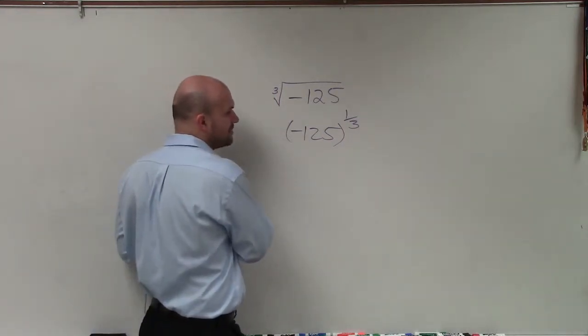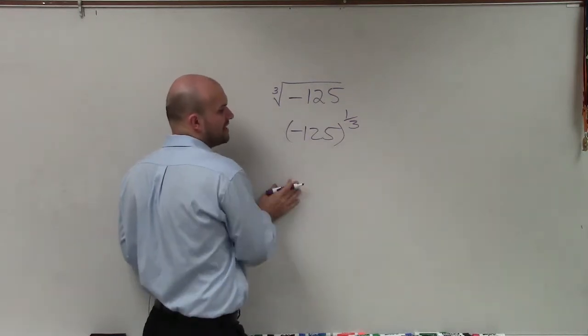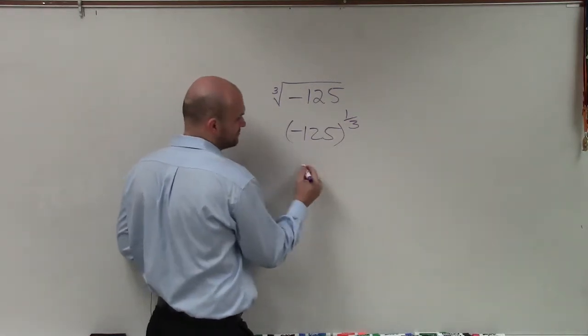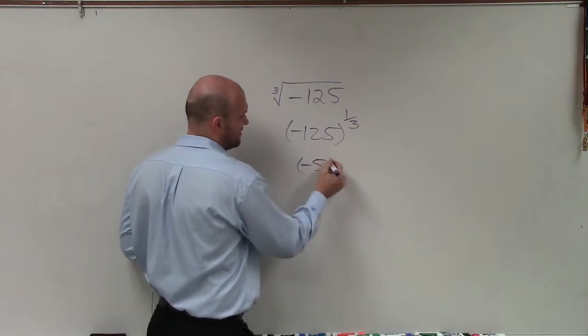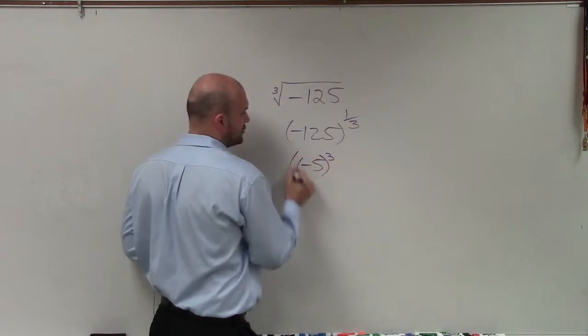So what number do I have to raise to a certain power to give me negative 125? Well, the answer is negative 5 cubed.